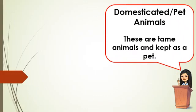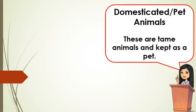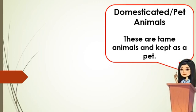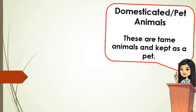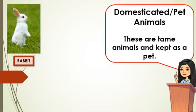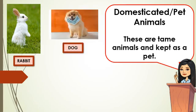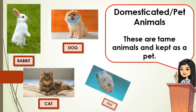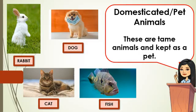Let's tackle the different animals in our surroundings. First, we have the domesticated or pet animals. These animals are tamed and kept as pets. Examples of these are rabbit, dog, cat, and fish. These animals are classified as domesticated or pet animals.